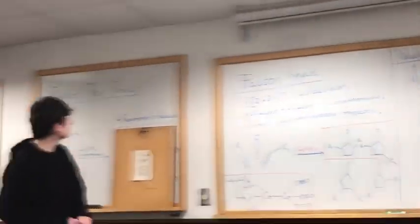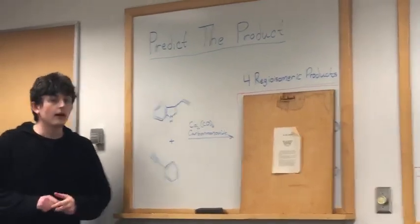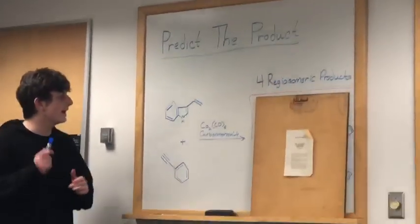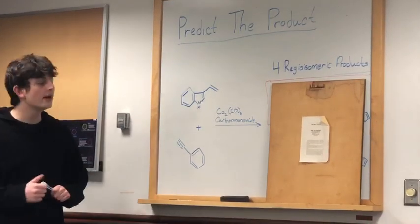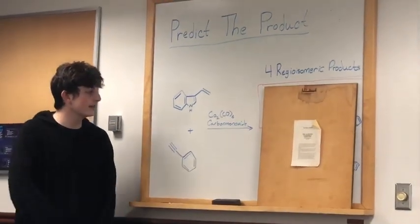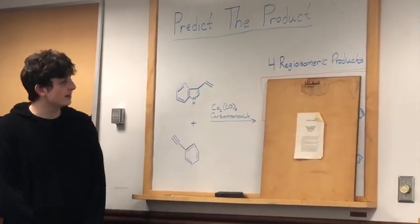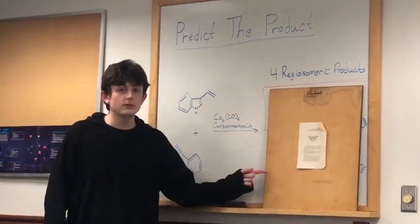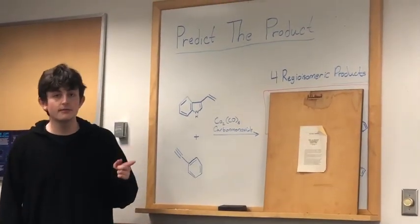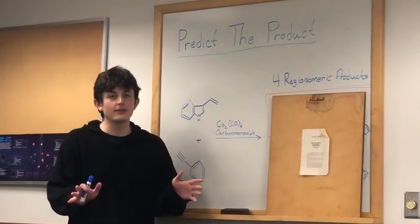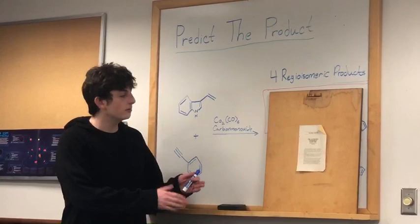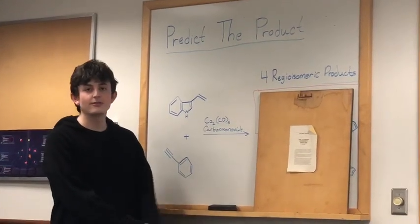All right, so let's do a little predict the product problem. So, here we have an alkyne with an indole on it, and an alkyne with a phenol group on it, coming together in our cobalt catalyst, as well as carbon monoxide. So, this is going to have four regioisomeric products, just like the last one we saw, and two of them are going to be favored. So, take a moment, pause the video, try and figure out what the products are, and which ones are favored.